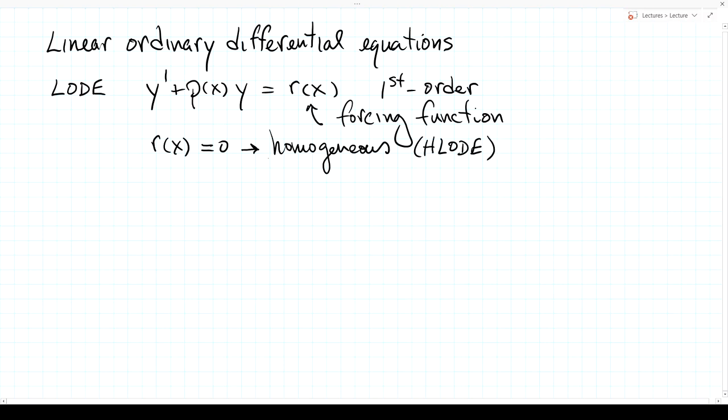A characteristic of homogeneous equations is that y identically equal to zero solves it — meaning, in electromagnetics, you can have no field. No field is a solution. If I have a forcing function, which could represent an electromagnetic source, then you can't have a solution that is no field because you've got something creating a field. So linear ordinary differential equations can be homogeneous or not.